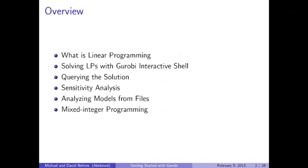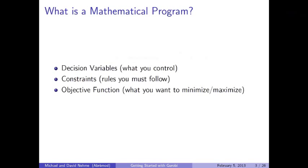Before we get to all that, let's briefly define the linear program and some related terminology. A linear program is a special case of a more general class of problems known as mathematical programs — note that we're using the term 'program' to mean a plan of action rather than a computer program. A mathematical program consists of three components: decision variables, which are things that you control; constraints, which are rules you have to follow; and an objective function, which specifies what you want to minimize or maximize.